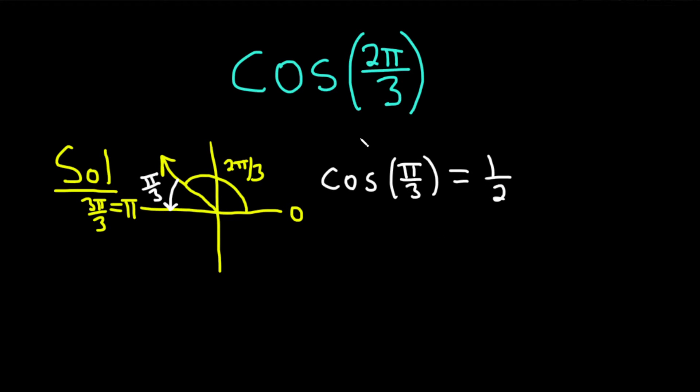So we have to think about the unit circle again, right? On the unit circle, every ordered pair is of the form cosine θ comma sine θ. And so over here, we're in quadrant 2. The x coordinate is negative. Cosine is the x coordinate. Therefore, it's negative. Therefore, the answer is negative 1 half. Boom.